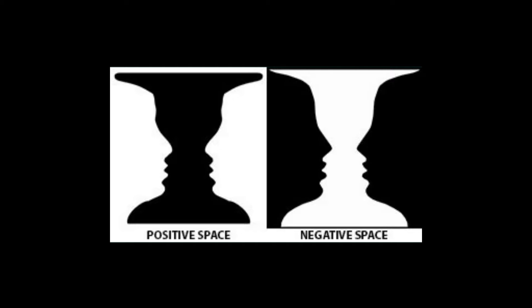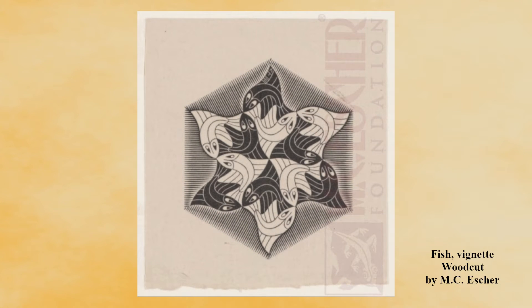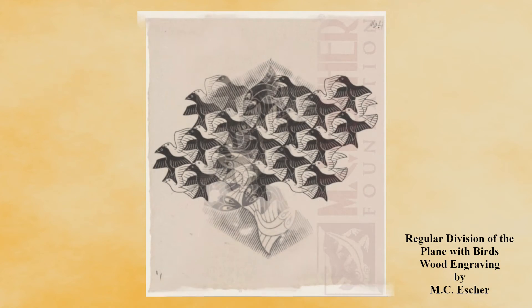Many artists play with this positive and negative space dynamic. Today we are going to focus on one artist that loved to use this technique to create impossible constructions — Mr. M.C. Escher. He was a Dutch artist born in 1898, and a graphic artist who used many different mediums including wood carvings and lithographs to create these impossible constructions.